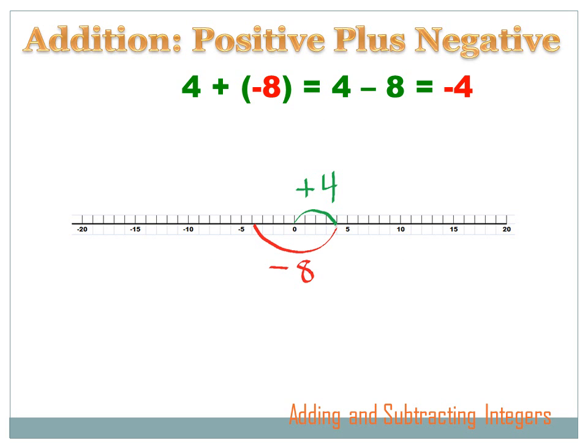What happens if we're adding a positive number and a negative number, and the absolute value of the negative number is greater than the absolute value of the positive number? That just means you've got more power pushing you to the left than to the right. Looking at the number line: I start at zero, go plus four into the positive side, but then a bigger negative number pushes me further — eight to the left — and I end up at negative four. The difference between eight and four is four, and since the negative number has the greater absolute value, I end up on the negative side.